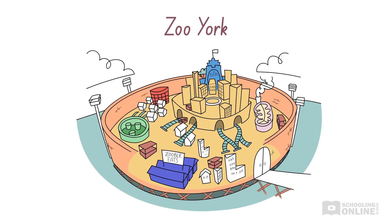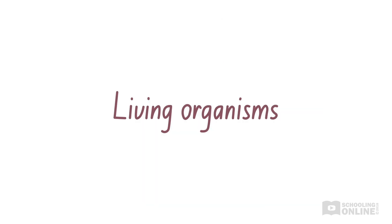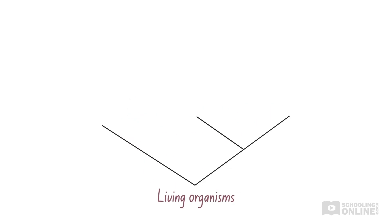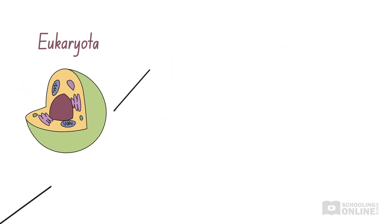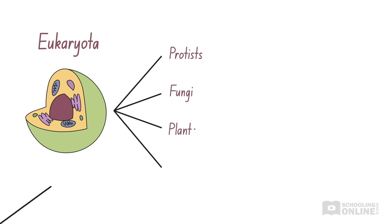Before we continue, let's revise over some important definitions. If you recall, living organisms can be classified under three domains: bacteria, archaea and eukaryota. Eukaryota, or eukaryotes, can be classified into four kingdoms including protists, fungi, plants and animals.